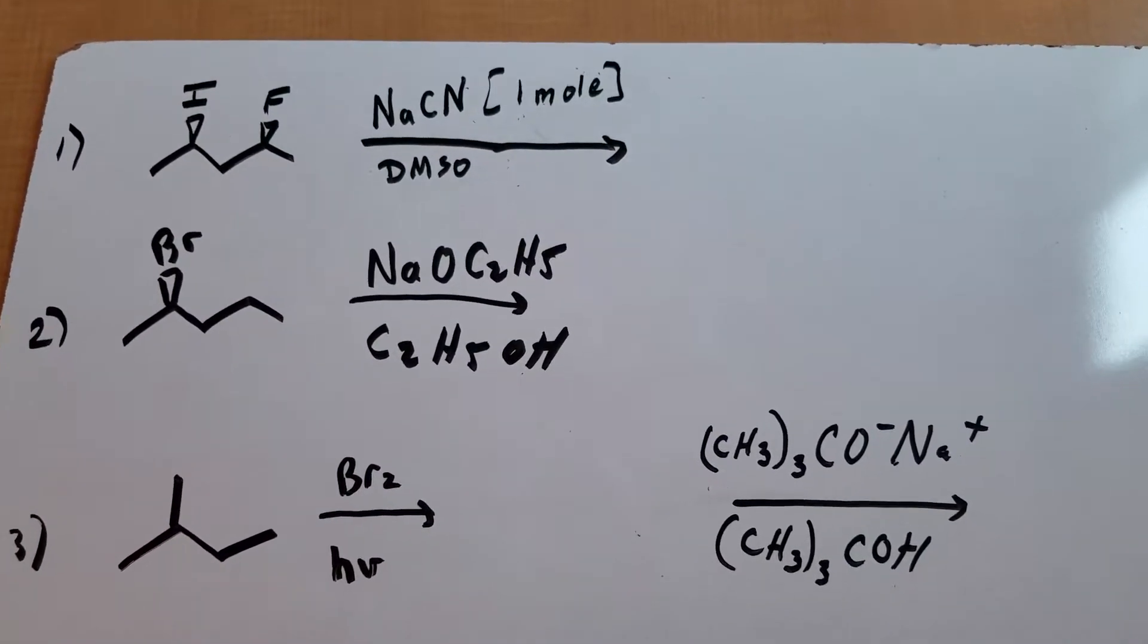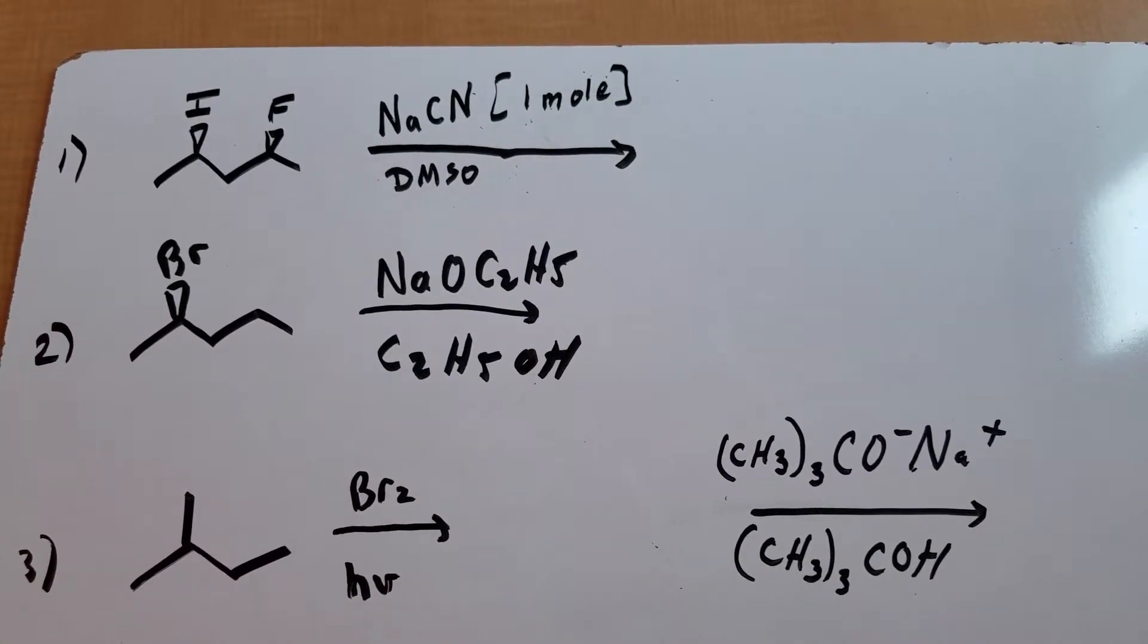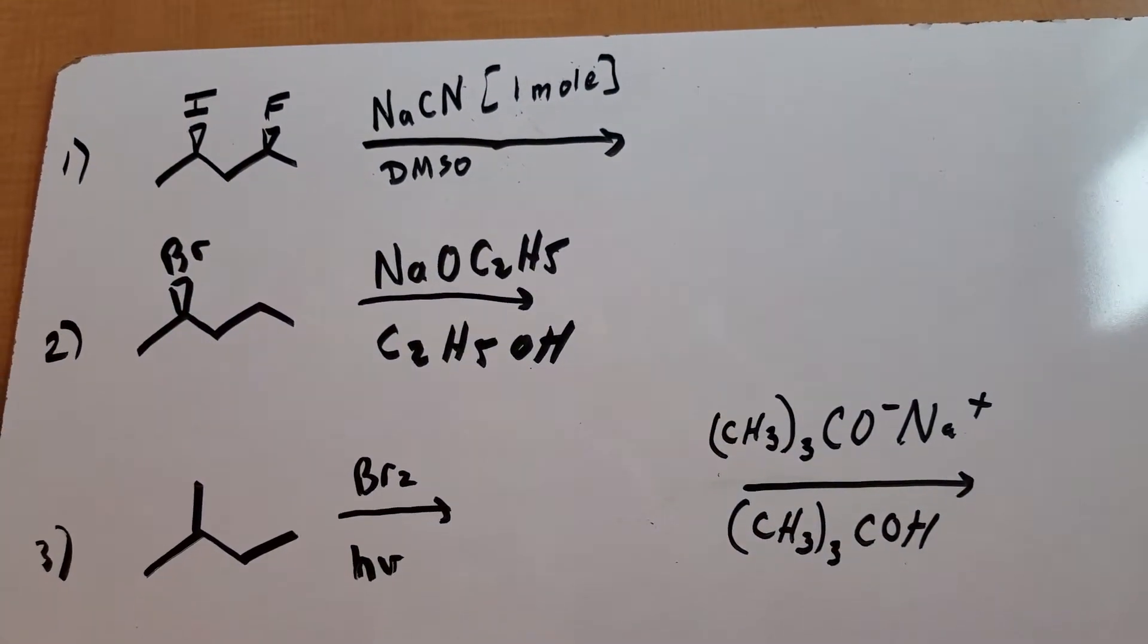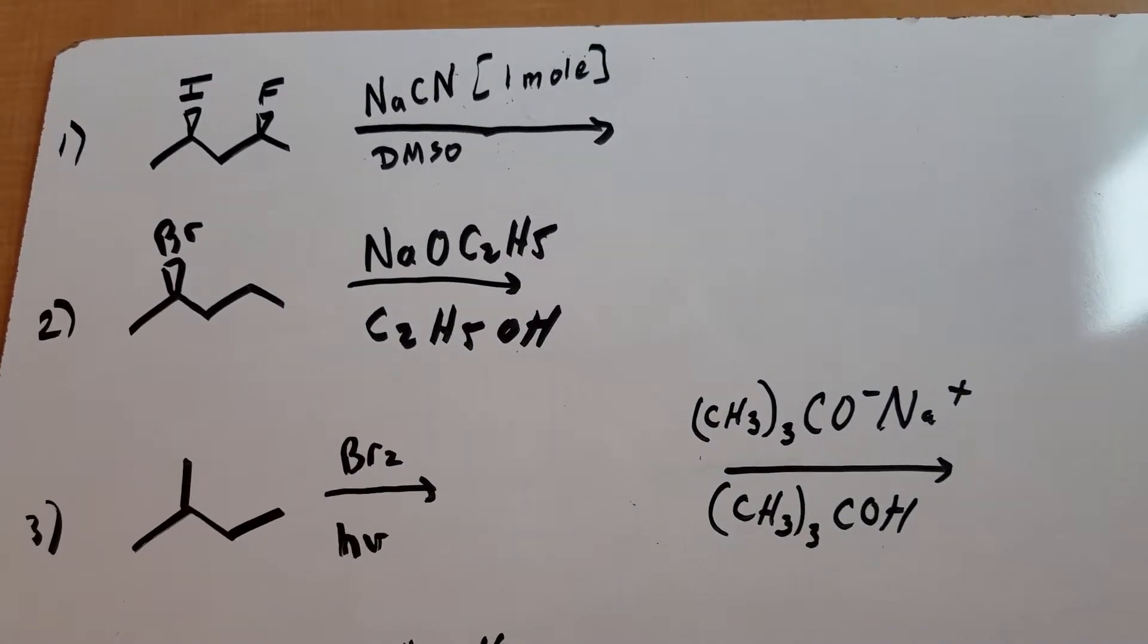The carbon-fluorine bond is very strong, so I don't think the fluorine is going to want to leave. Iodine is a great leaving group, so that's the group that's going to leave. And since it's an SN2 reaction, we're going to do an inversion.